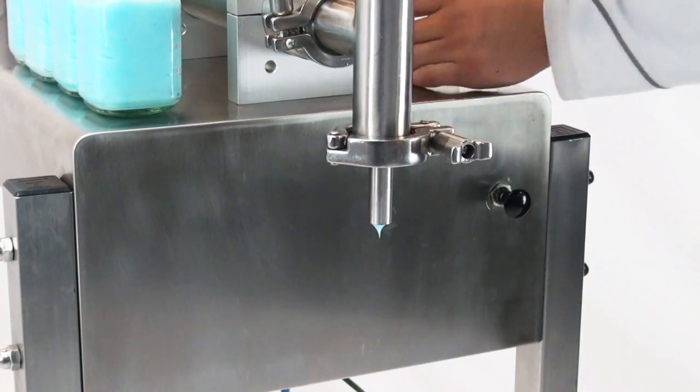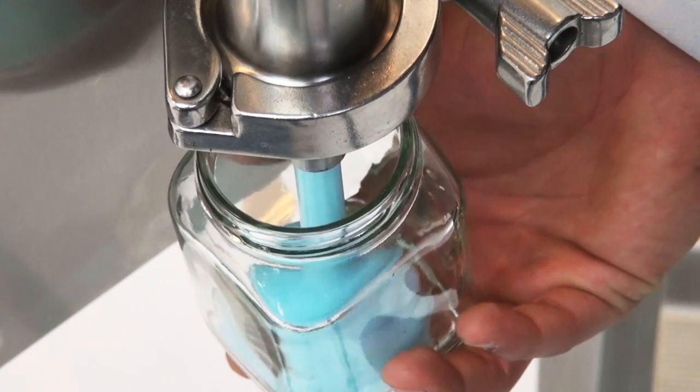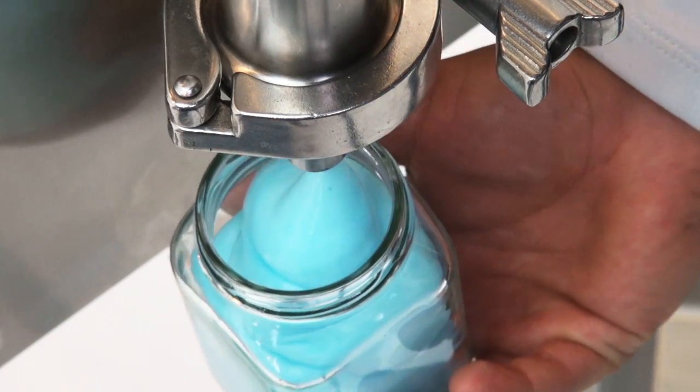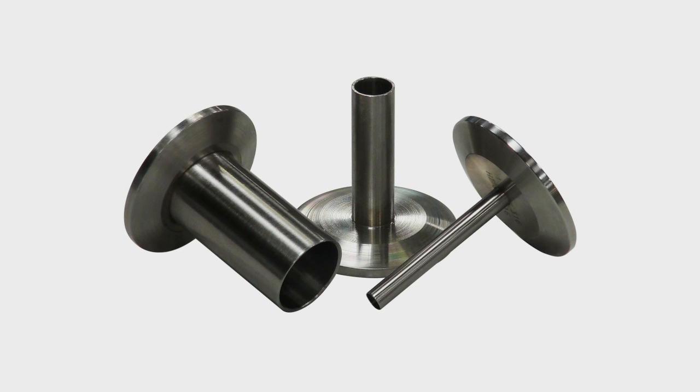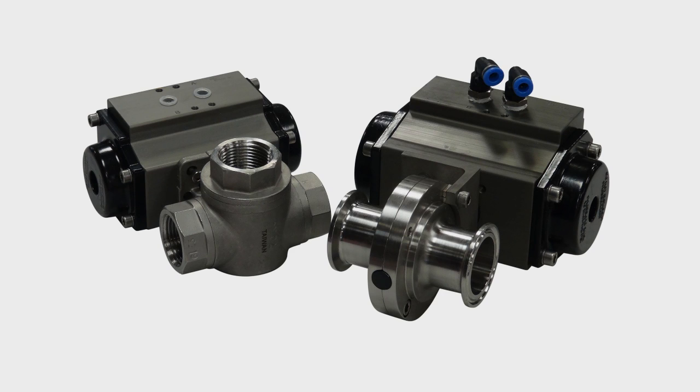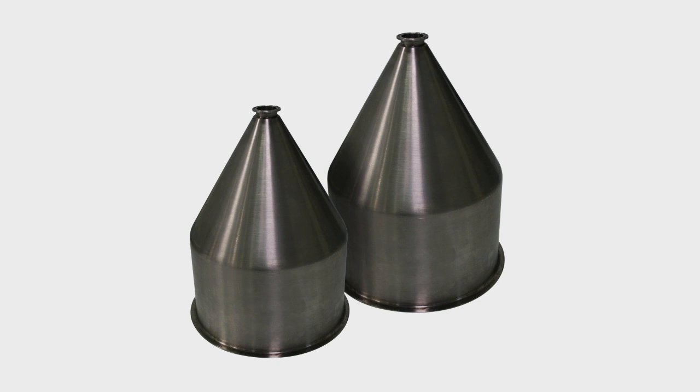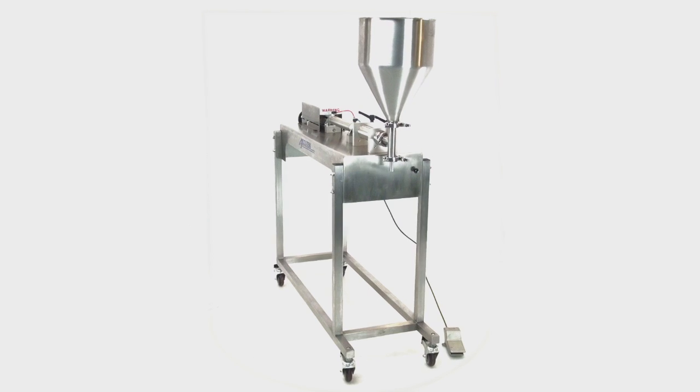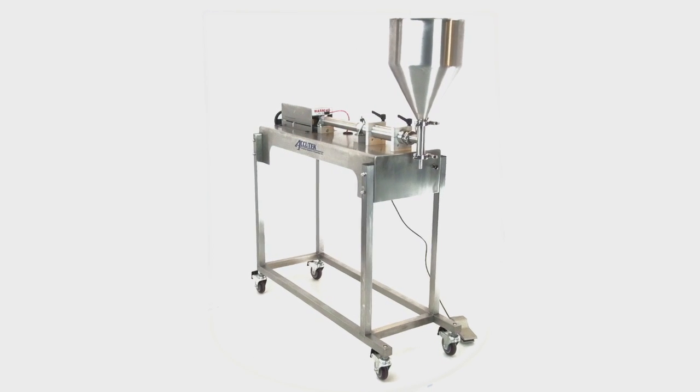Accutek semi-automatic volumetric piston fillers also have a wide variety of options available, such as custom nozzles, chunky product valves for particulate filling, multiple cylinder sizes, expanded bulk hoppers, and mobile stands as seen in this video.